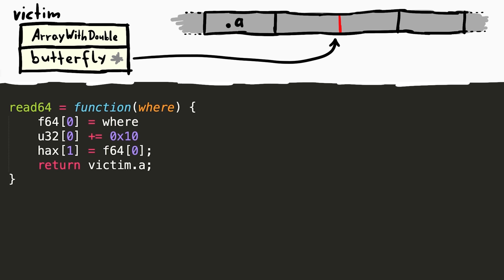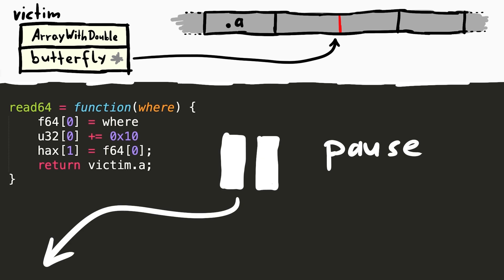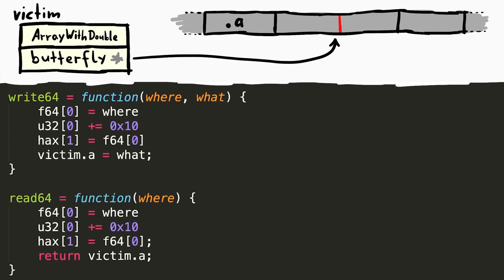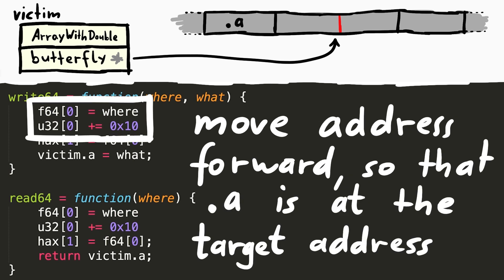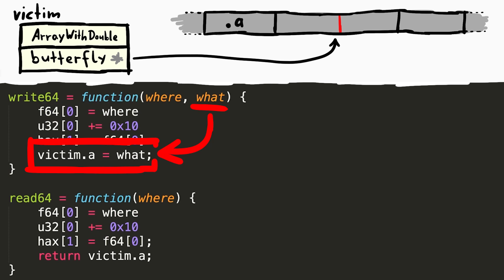A write is obviously super simple as well. You again take the address you want to write to as a double, add 0x10 to compensate for the minus 0x10 when you access the property, and then simply assign the value you want to write to the property .a.